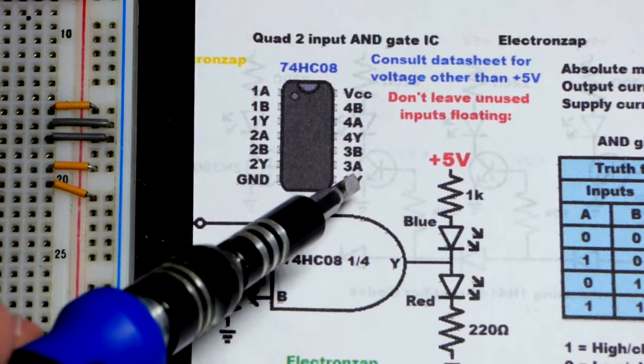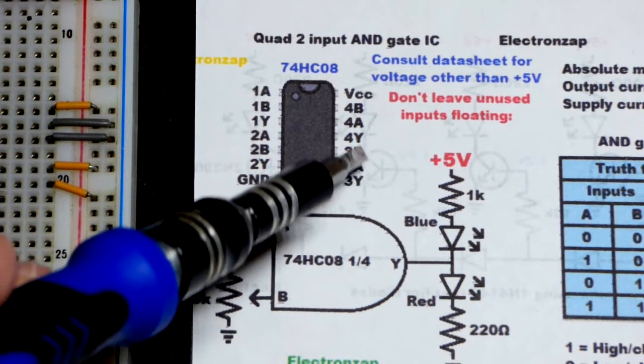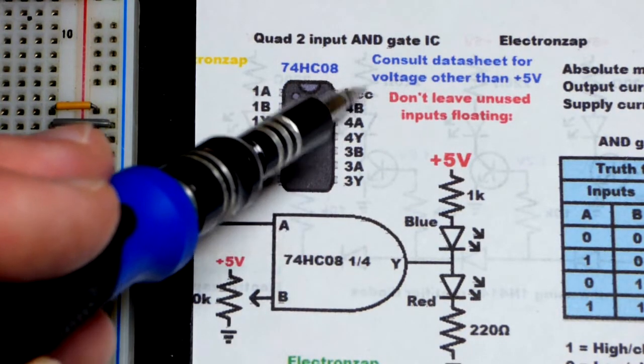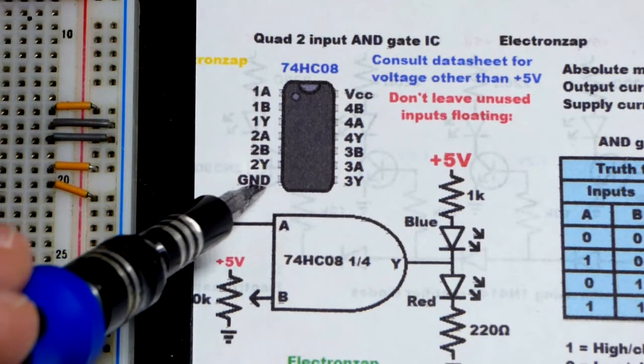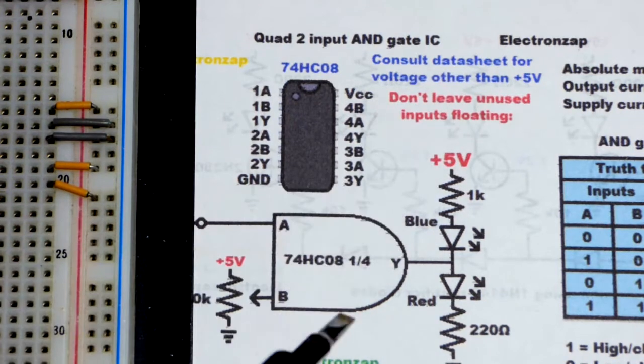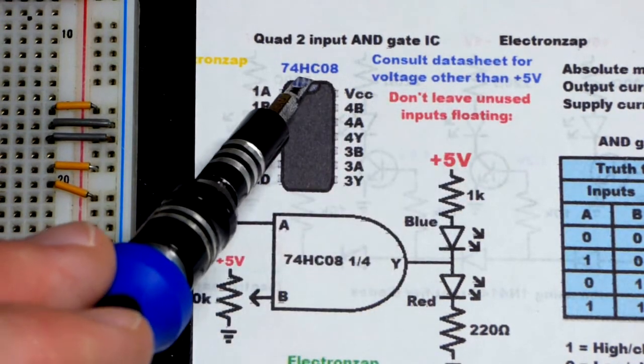As I said before there are four AND gates on here. You can see ones up there, two is there, three is there, and four is there. Remember when you're working with these they number their way around like that. Power supply pins are not always top right positive, bottom left negative. Sometimes they can be moved.